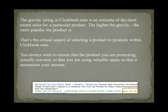An example of a high gravity product found within the ClickBank marketplace could be titled 'Convert Your Car to Burn Water and Gasoline = Double Your Mileage.' You can see the gravity in the green link located below the title reads 521.18. Scout out the marketplace for higher gravity products to promote — typically when you do such a general search, the products with higher gravity will appear first in search results.